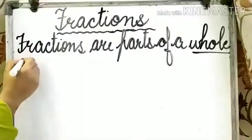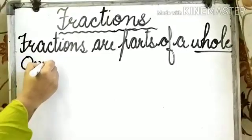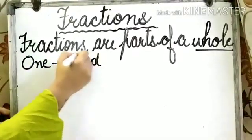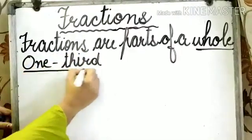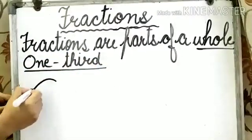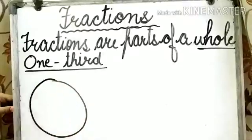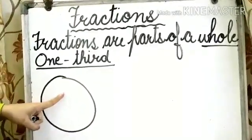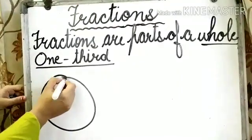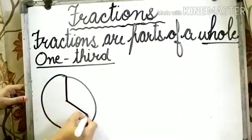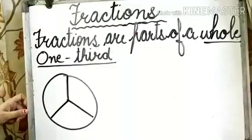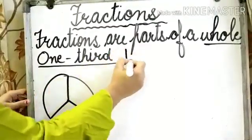Now what is one third? This is a whole. But when a whole is divided into three equal parts, each part is called one third, or we can say one by three.